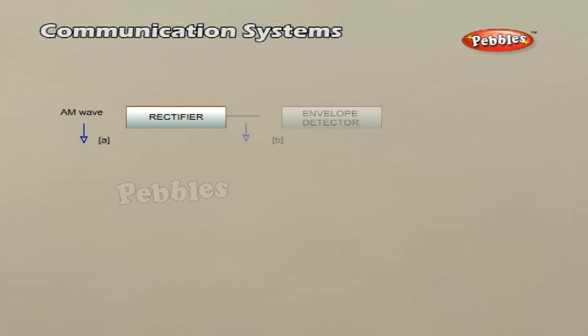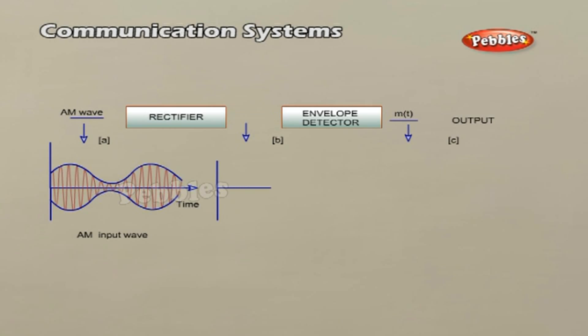Detection is the process of recovering the modulating signal from the modulated carrier wave. We just saw that the modulated carrier wave contains the frequencies ω and ωc ± ωm. In order to obtain the original message signal, that is m(t) of angular frequency ωm, a simple method is shown in the form of block diagram in the figure.